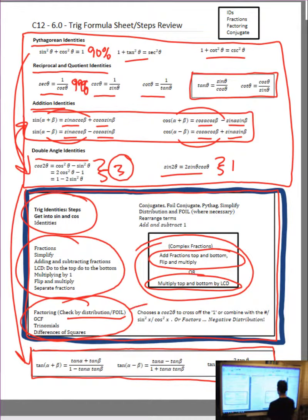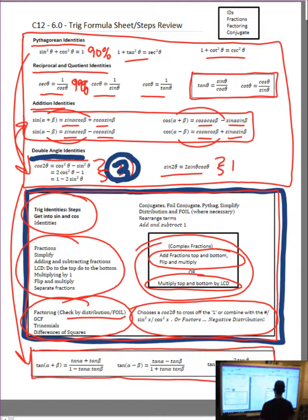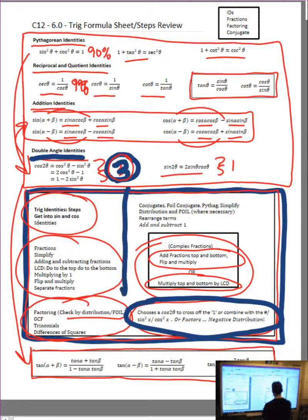Off to the right, choose a cos 2 theta. So I'm going to circle in blue, gigantic blue, above one of the double angle identities, and remember cos 2 theta has three options. So down below again, I'm going to circle in big blue and I'm going to put a big arrow down from what I'm talking about. So these three options - you want to choose the cos 2 theta that's going to cross off the one or combine with the other numbers or the sine squared theta or the cos squared theta or factors well or works well with negative distribution.